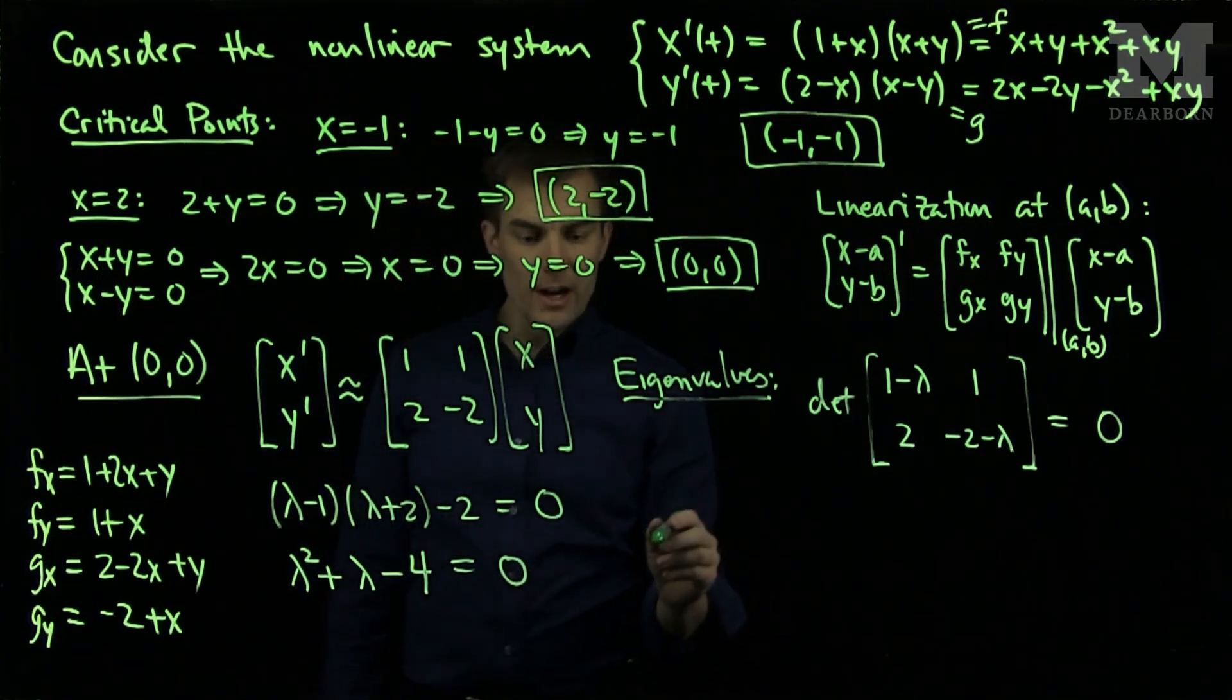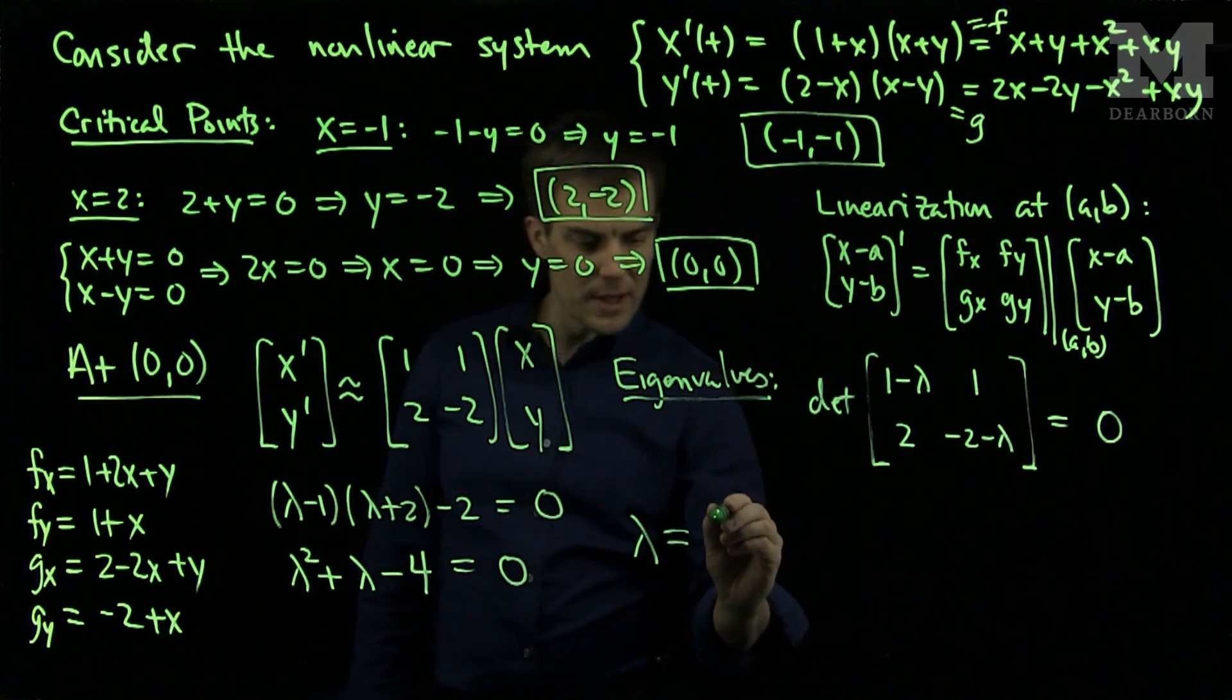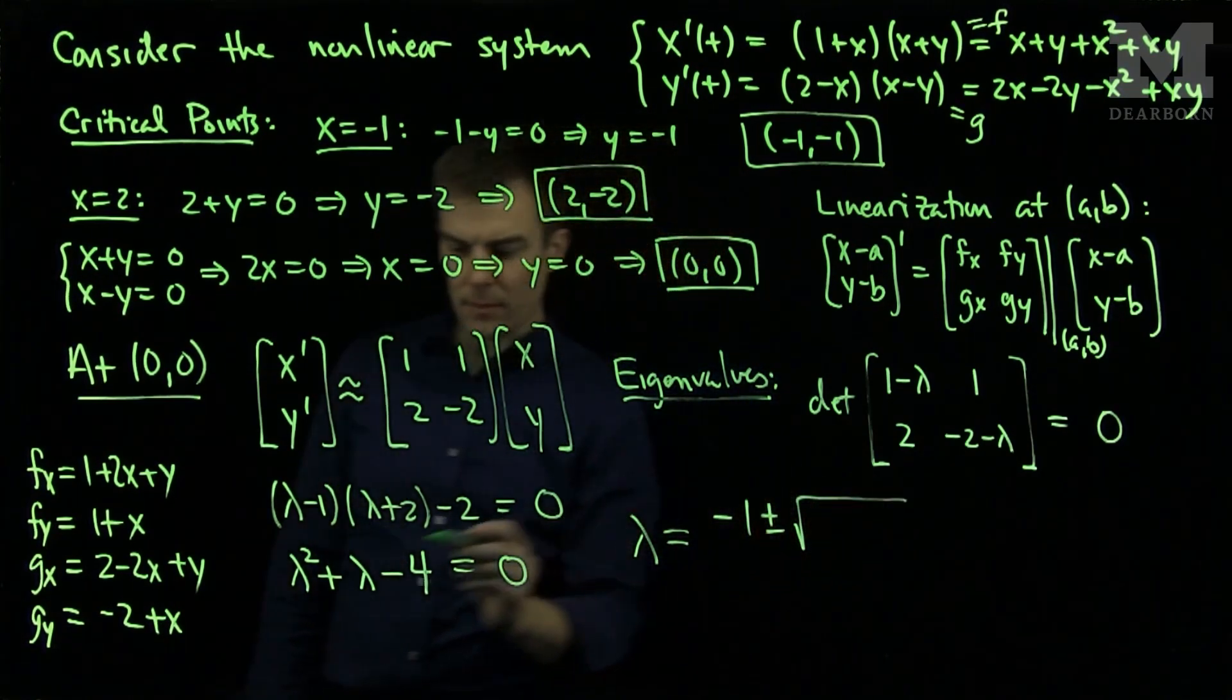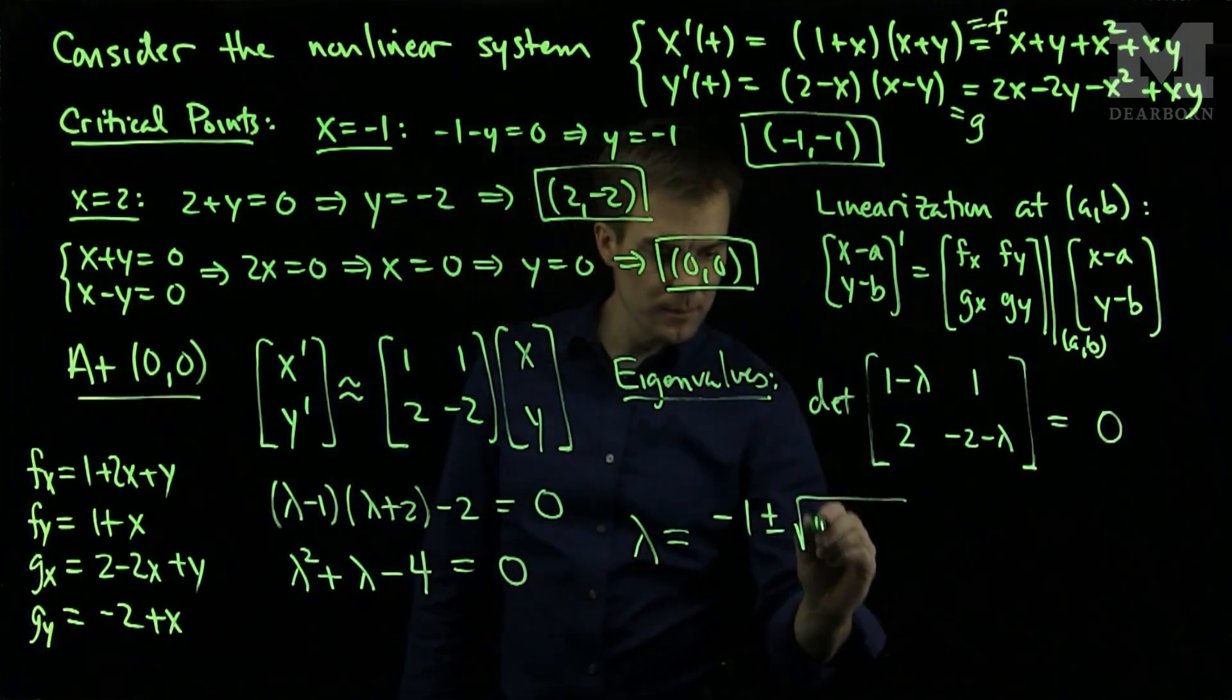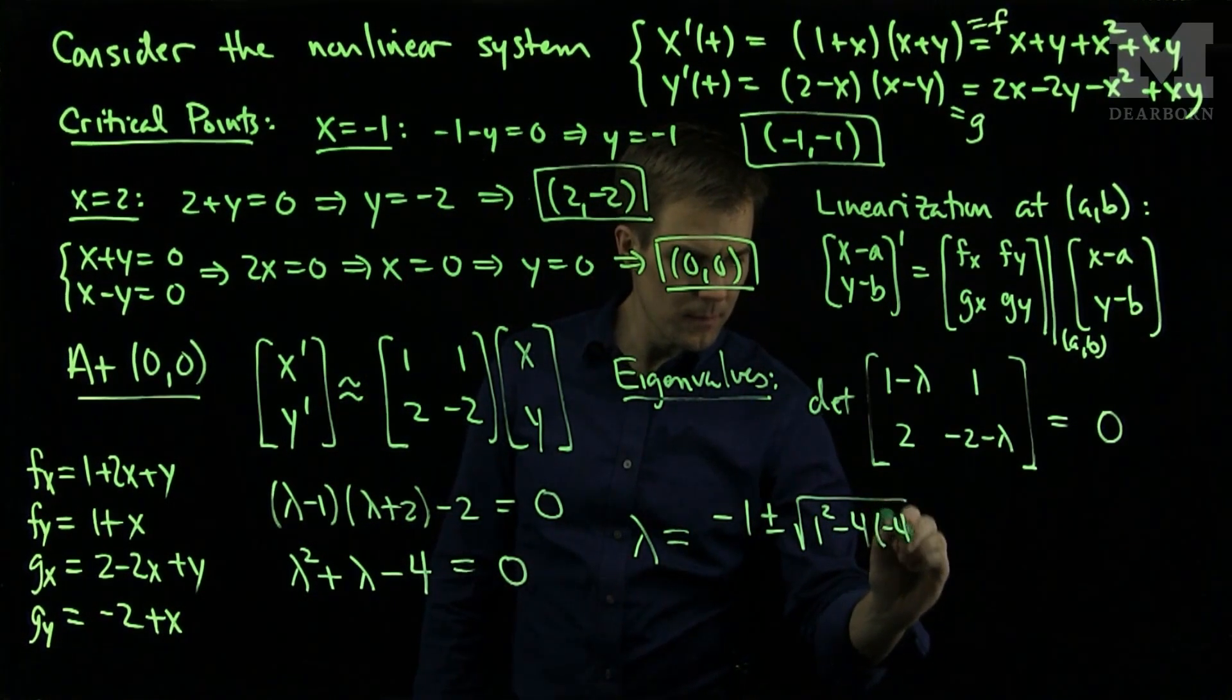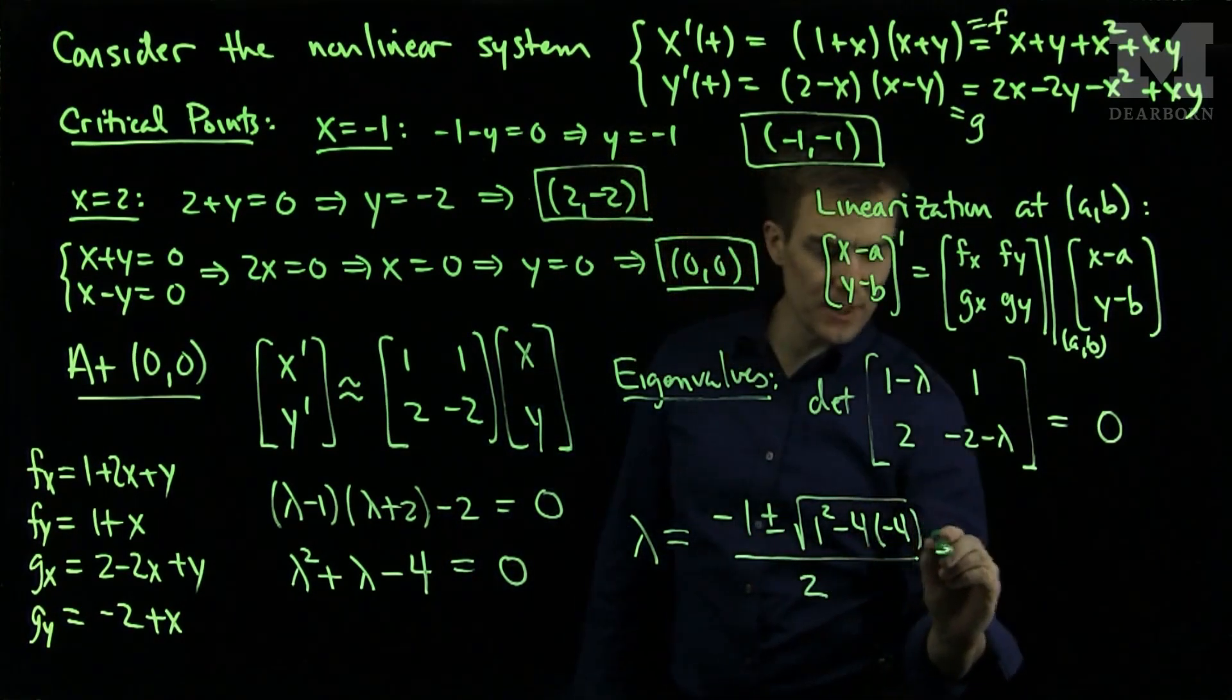Now, we can use the quadratic formula to find the values of lambda. Lambda by the quadratic formula will be negative 1 plus or minus the square root of 1 squared minus 4AC, all divided by 2.